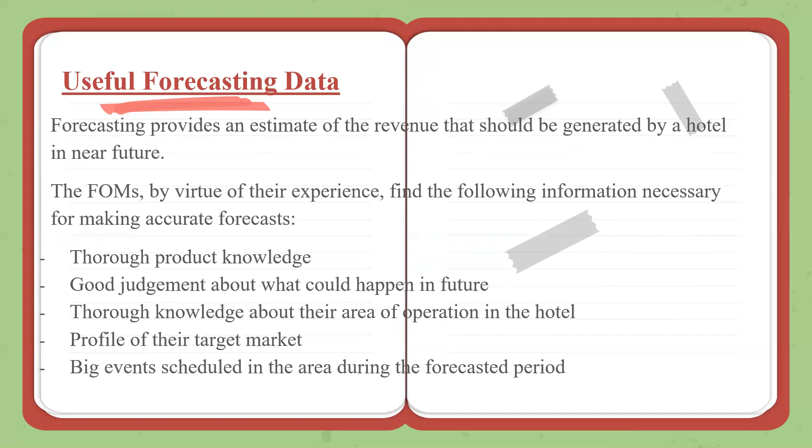The FOMs, typically when they do their forecasting for their department, have to know a lot of things. First is thorough product knowledge. They have to be absolutely thorough. They have to know the hotel inside out, all the areas, all the revenue generating sections, etc.